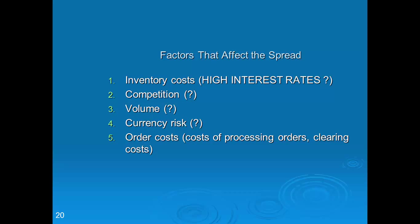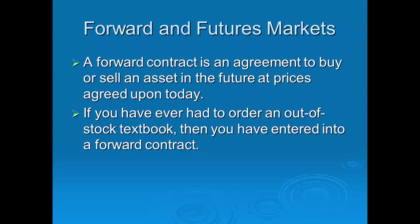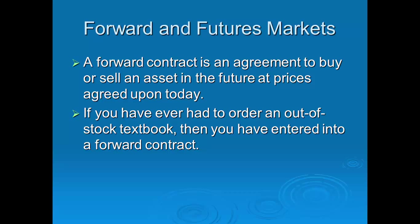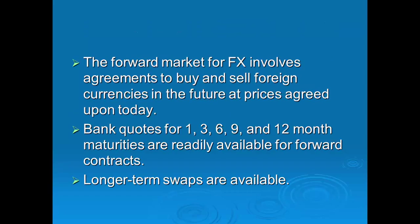A forward contract is an agreement to buy or sell an asset in the future at prices agreed upon today. If you have ever ordered an out-of-stock textbook, you have entered into a forward contract — you get the item at a later date but pay upfront. Similarly, when you enter into a forward contract for currency, you agree to buy or sell at a later date. For currencies, banks typically offer forward contracts for 1, 3, 6, 9, and 12 months. For longer terms, you may need to enter into a swap. The most liquid forward contracts are less than one year in maturity.